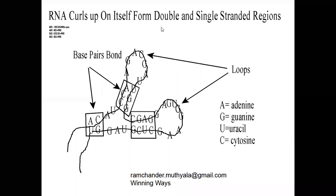rRNA, or ribosomal RNA, is present in the cytoplasm of the cell. rRNA shows a single-stranded polynucleotide chain, but during folding regions it shows hydrogen bonds between the two nitrogenous base pairs. During the folding regions it shows loop-like structures, mainly hairpin-like structures, and in the folding regions it shows double-stranded character; the rest remains single-stranded.